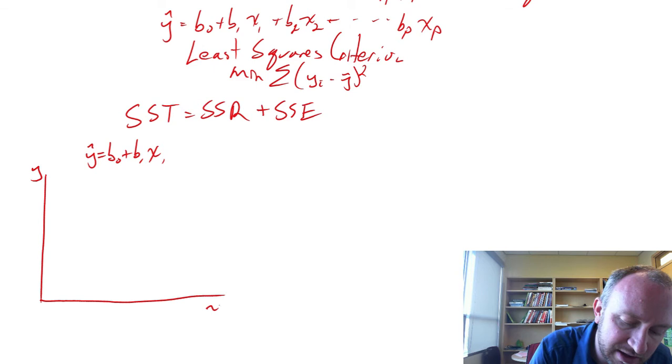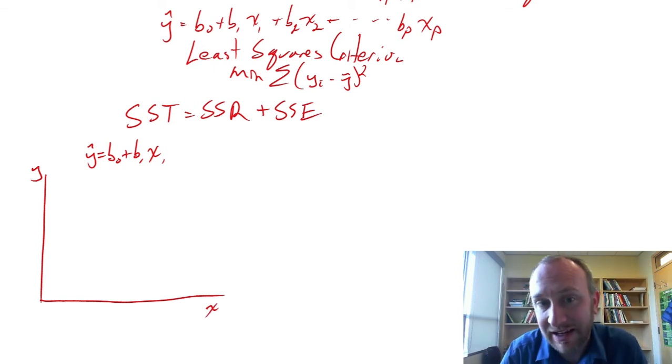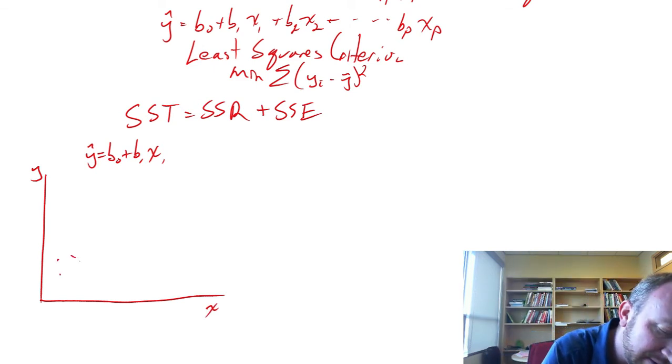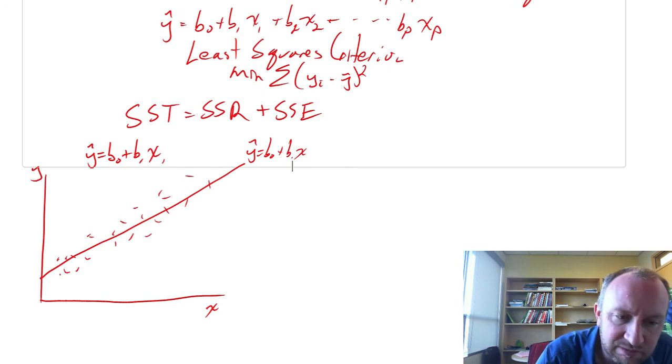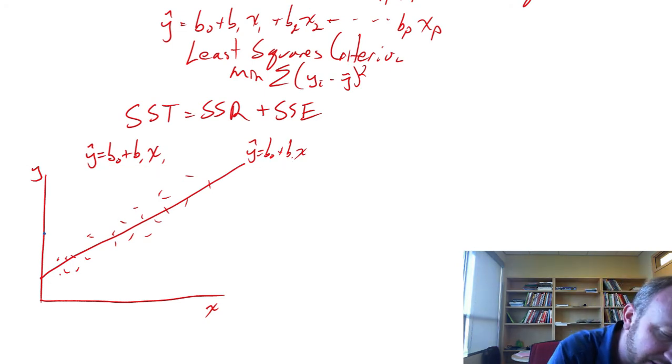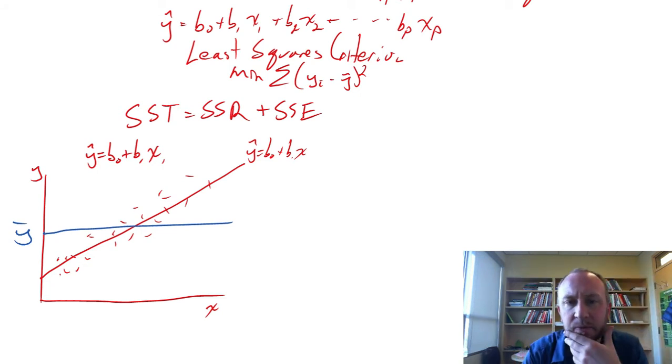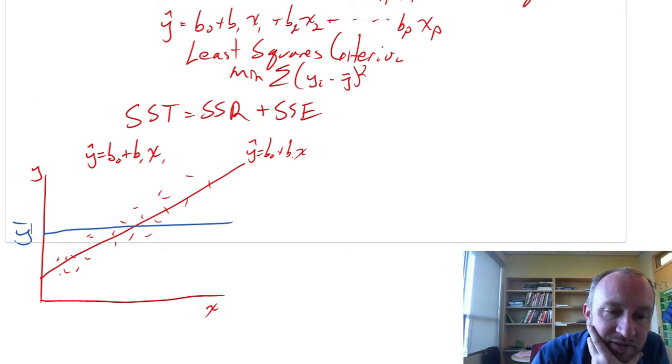And maybe this is what the scatter plot looks like of those observations. And we want to estimate this relationship, b0, b1, x1. And within that sample here we have whatever is that y bar, that average value for the dependent variable.